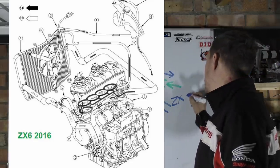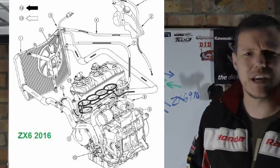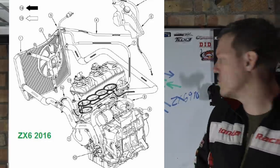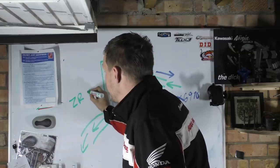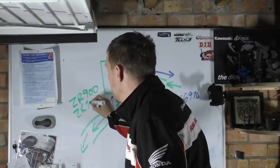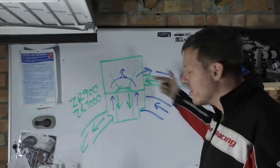So the ZX series, the 6, the 9, I don't know if they do a 10 and a 12, I think they do a 10 nowadays. They have this blue conventional route where the Z series, which is actually ZR, the ZR900, the ZR1000, they have the cooling system in the green arrows, the reverse system.